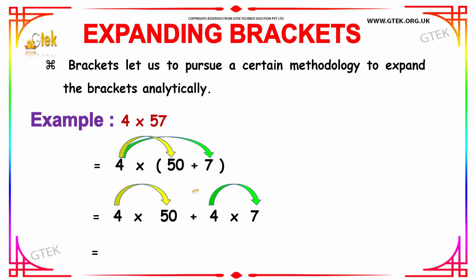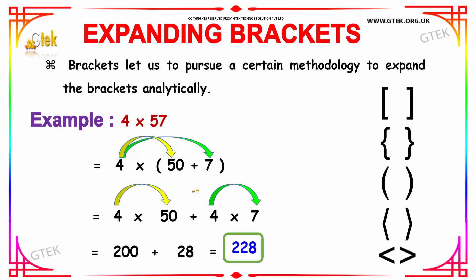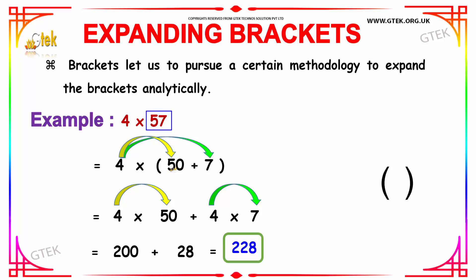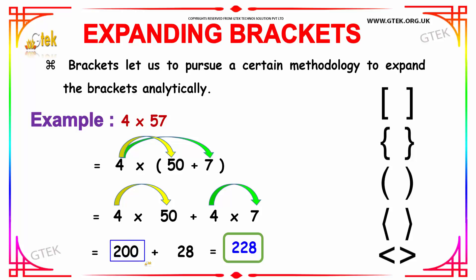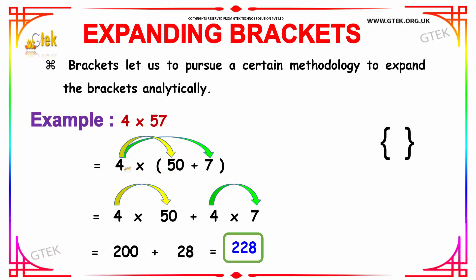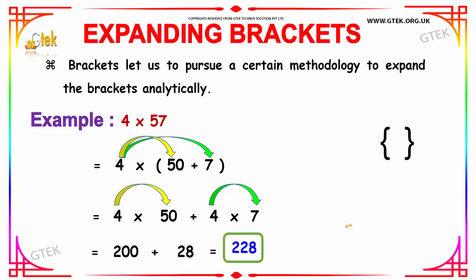In this example, 57 is split into 50 plus 7 inside a bracket. So for multiplying 4 into 57, we multiply 4 with 50 and 4 with 7. That is, 4 multiplied by 50 gives 200, and 4 multiplied by 7 gives 28, because the multiplicand 4 is common for both terms. So 200 plus 28 gives the answer 228.